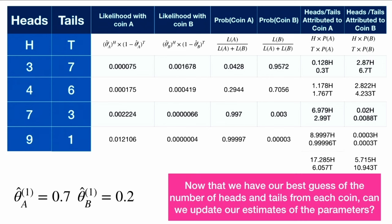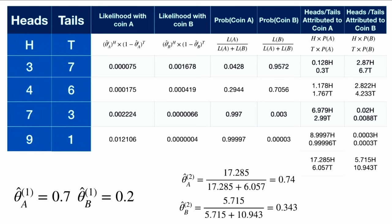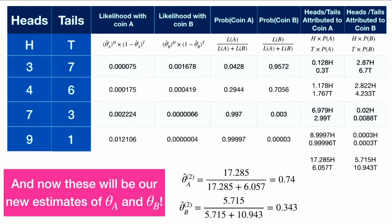Now that we have our best guess of the number of heads and tails from each coin, we update our parameter estimates. We take the attributed number of heads divided by the total number of coin flips attributed to each coin. Our second estimate changes from theta_hat_A = 0.7 to 0.74, and theta_hat_B from 0.2 to 0.343.